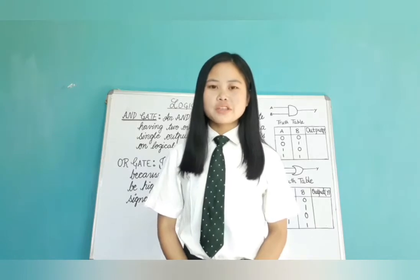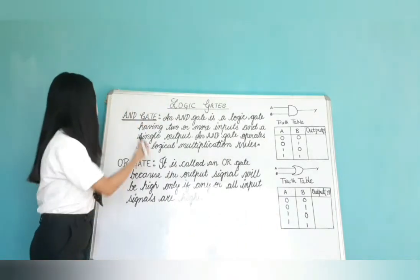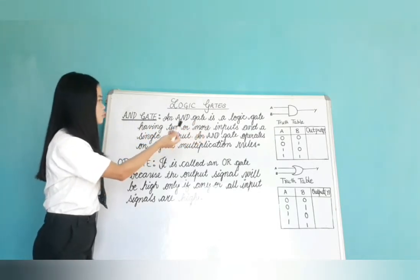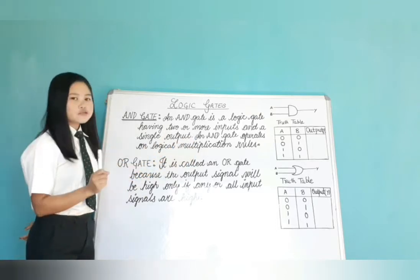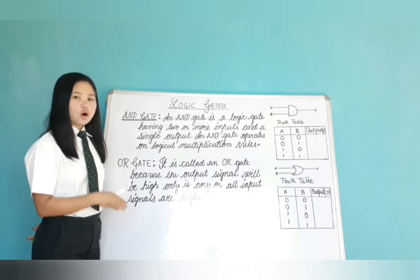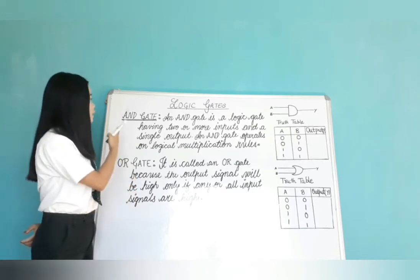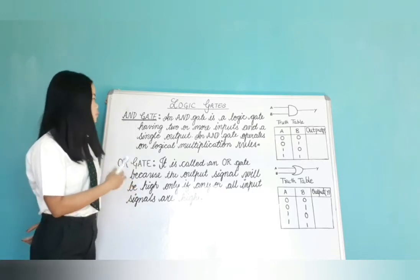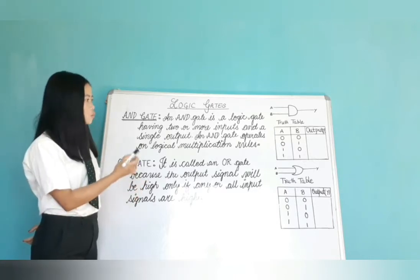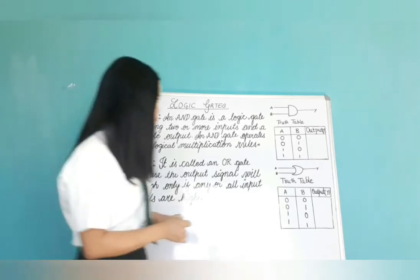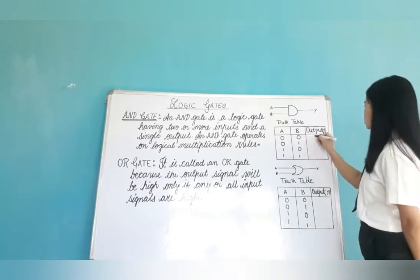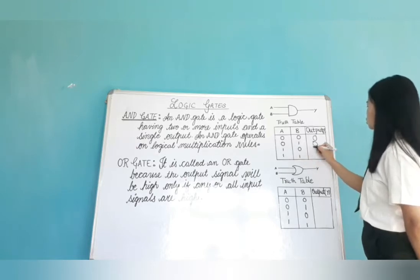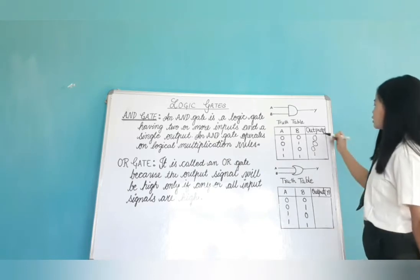Now, we will see all the logic gates one by one with the help of truth tables. First, we will see AND gate. AND gate is a logic gate having two or more inputs and a single output. AND gate operates on logical multiplication rules. So AND gate can have two or more than two inputs. With its truth table: 0×0=0, 0×1=0, 1×0=0, and 1×1=1. Here, 0 represents low signal and 1 represents high signal.